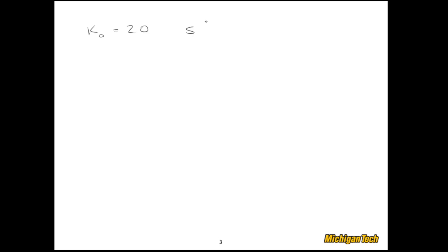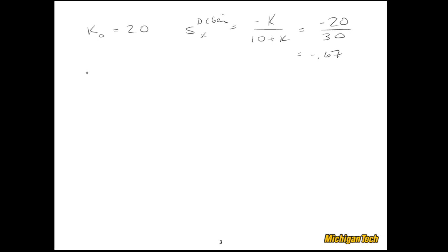Now if I had another design where k is 20, the sensitivity of DC gain with respect to k — using our expression negative k over (10 plus k) — becomes negative 20 over 30, or negative 0.67. So if k-zero goes from 20 up 10 percent to 22, the DC gain is going to go down by 6.7 percent — quite a significant change compared to the previous example.